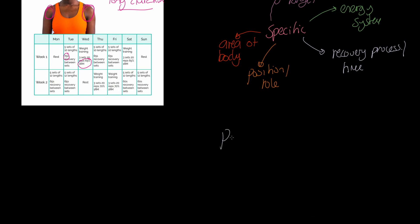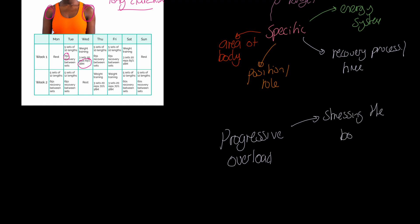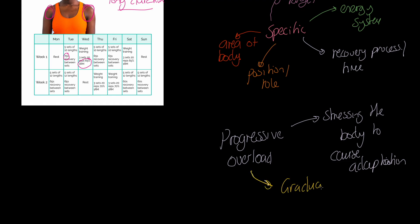One of the absolutely essential features of any training program that wants to cause physiological adaptation is that it must achieve progressive overload. Progressive overload is literally the process of stressing the body — doing more, or more often, or more of it — to cause adaptation. That's the obvious part. But progressive overload also has to be done gradually and steadily.